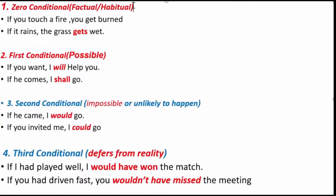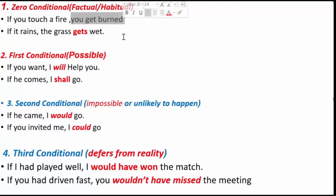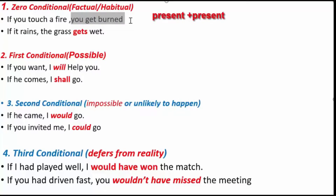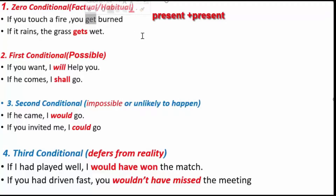Number one: Zero conditional. Zero conditional is used when we want to talk about facts. When you are going to talk about facts, you will find the result is always the same — more accurate, actual. If you touch a fire — that is present indefinite — and that is present simple. That is why we have zero conditional. If you touch a fire, you will get burned.